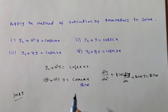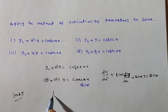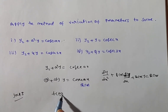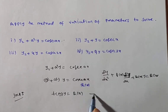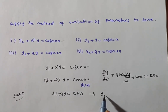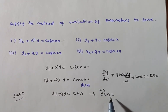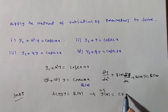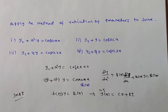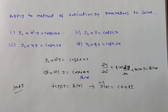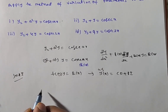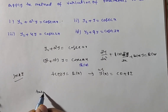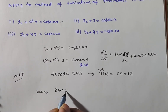The general solution of the differential equation is y(x) = complementary function + particular integral. Now in Step 1, we need to find the complementary function. To find the CF, we take r(x) = 0, giving f(D)·y = 0.